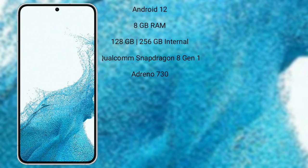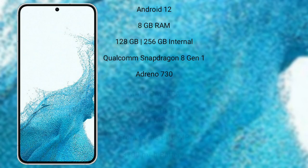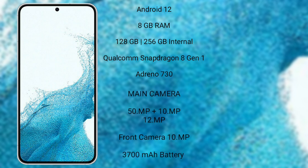Samsung Galaxy S22 runs on the Android 12 operating system. It comes with 8GB RAM and 128GB or 256GB internal storage, Qualcomm Snapdragon 8 Gen 1 processor with Adreno 730 GPU.